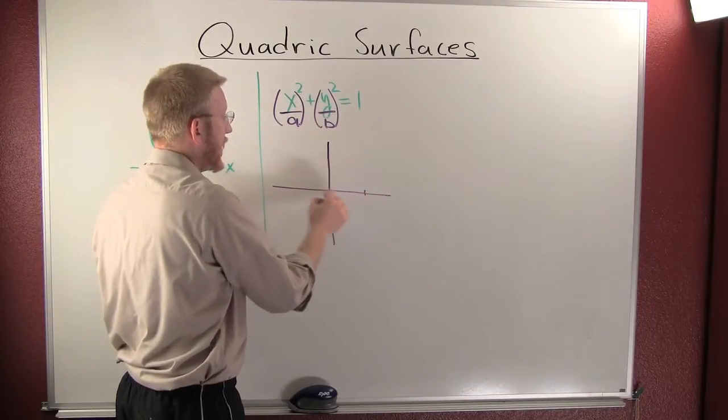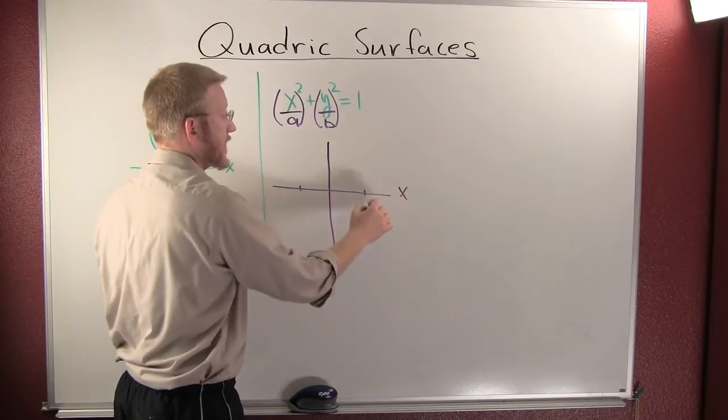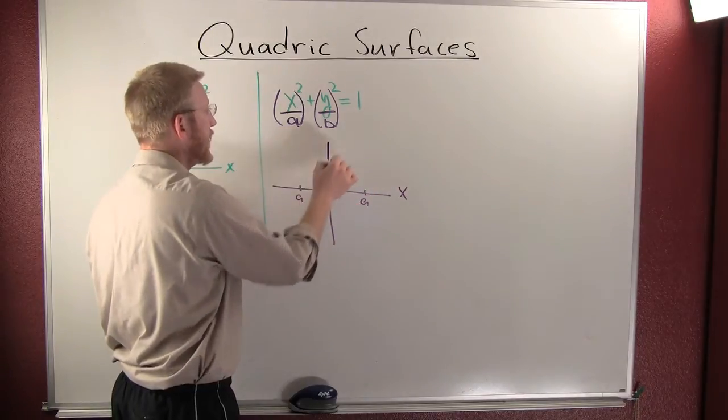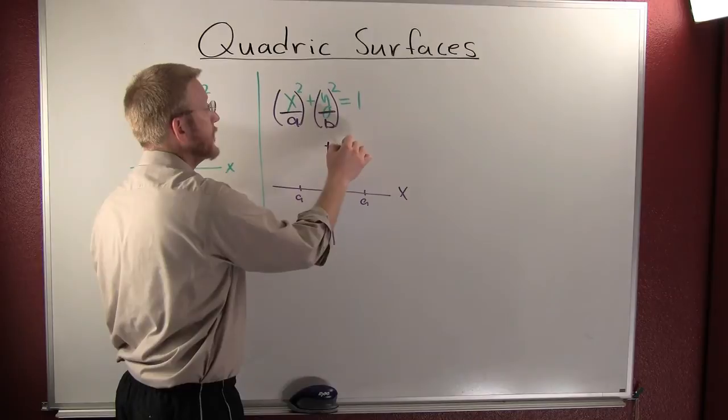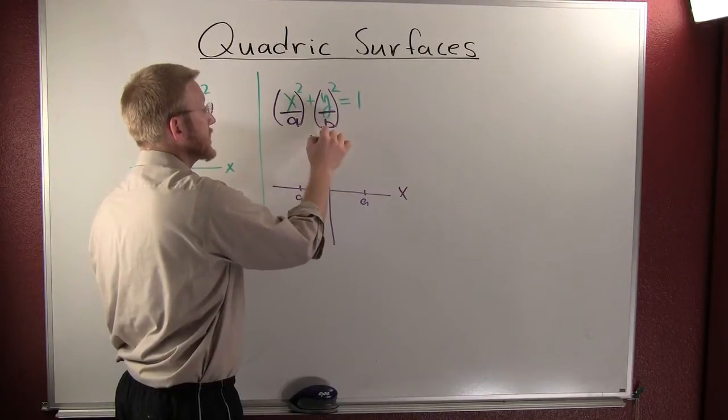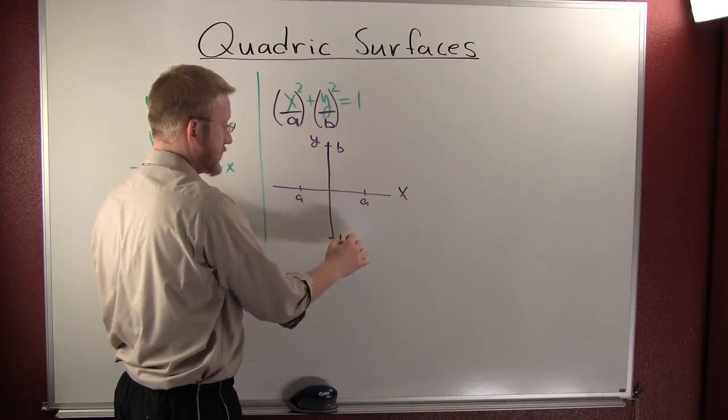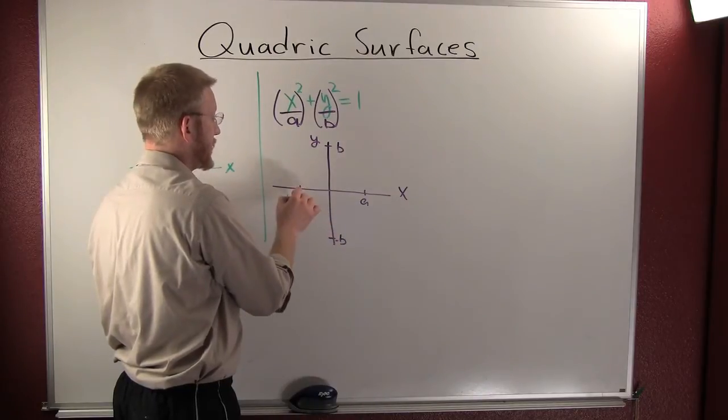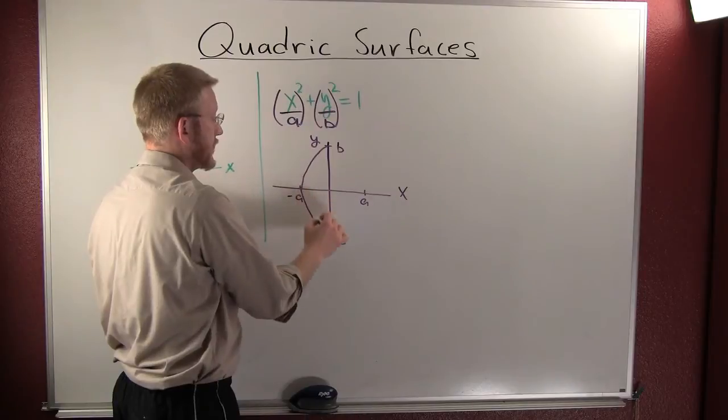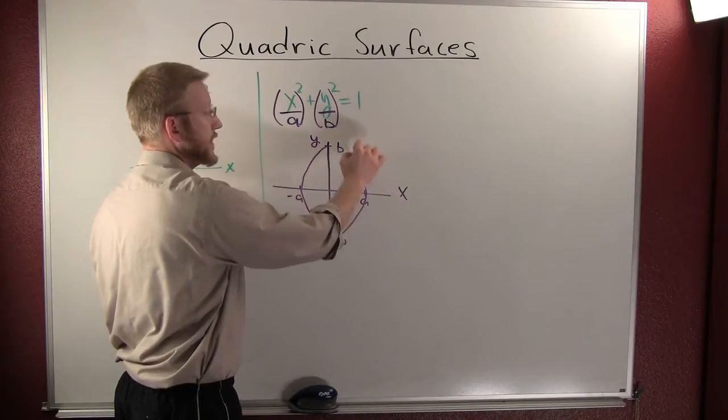You go out a far on the x-axis and you go over b or up b far on the y-axis and down b far on the y-axis. I guess these are minus b and minus a. And then that's your ellipse right there.